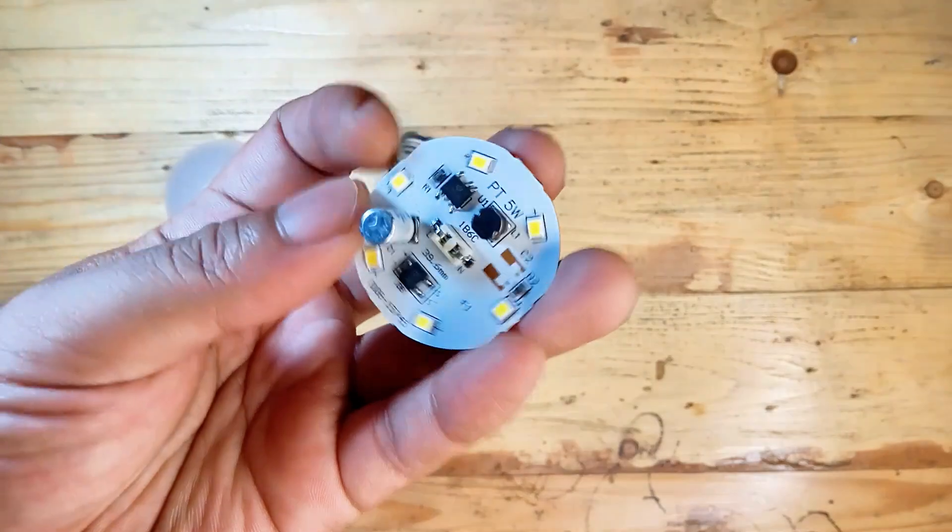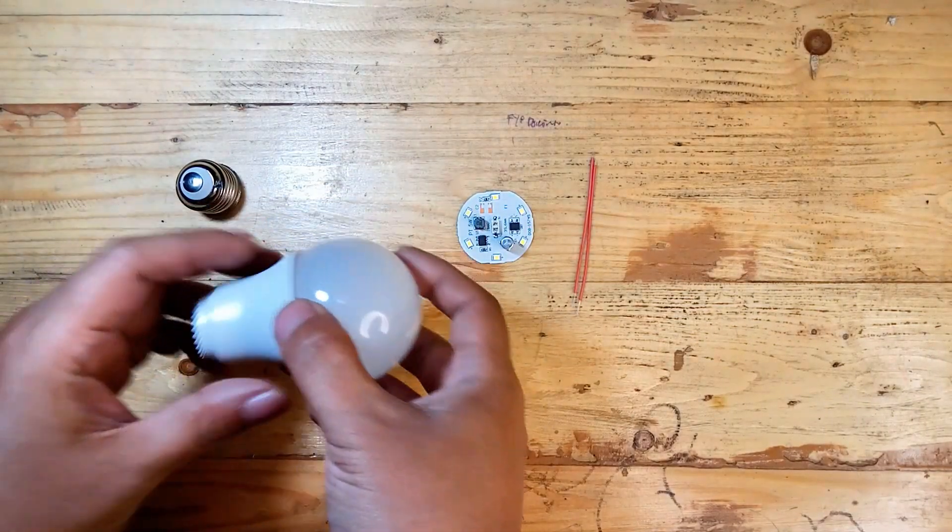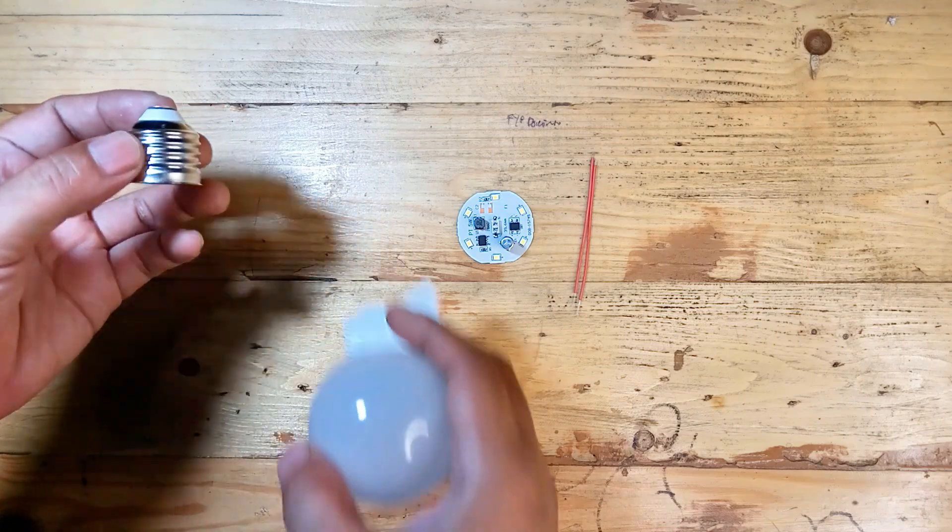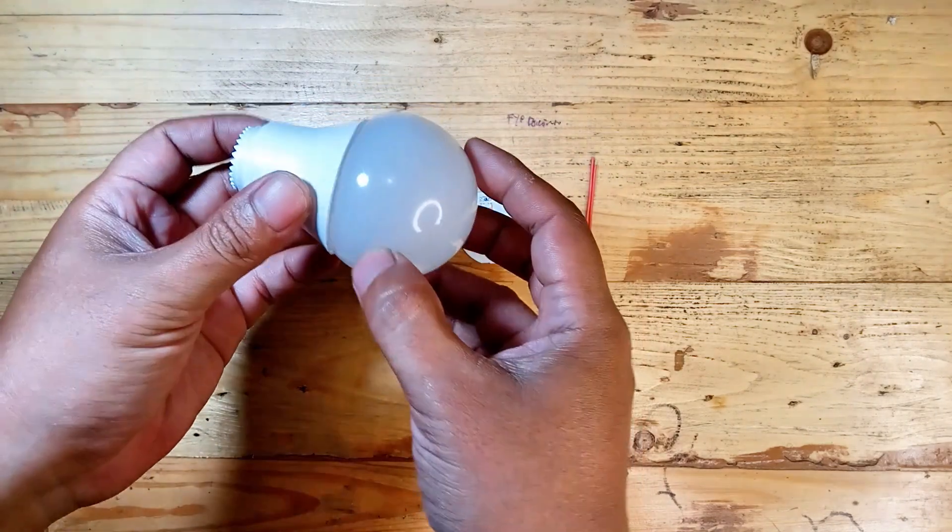What you'll need are a PCB module, a bulb housing. This typically includes the base or connector and the cover. The best part, you don't need to solder anything. Let's start assembling.